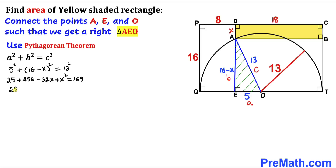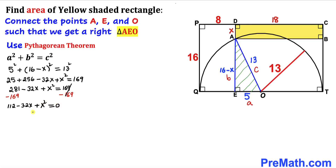Combining like terms: 281 − 32x + x² = 169. Subtracting 169 from both sides gives us 112 − 32x + x² = 0.